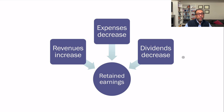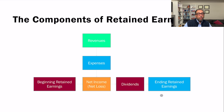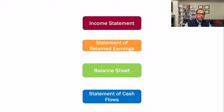Revenue plays an important role in retained earnings: if revenue increases, retained earnings increase; if expenses decrease, retained earnings increase; if dividends decrease, retained earnings increase. Revenue minus expenses equals net income; if expenses exceed revenue, there is a net loss. The components of retained earnings are: beginning retained earnings, plus net income or minus net loss, minus dividends, equals ending retained earnings.